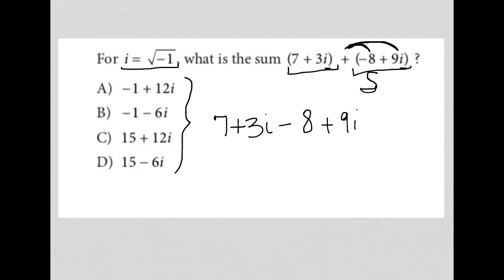So what I'm going to do now is combine like terms. I have 3i and 9i, so that makes 12i. And then for my numbers, I have 7 and negative 8. So 7 minus 8 is negative 1. So negative 1 plus 12i is the correct answer. And that is choice A.